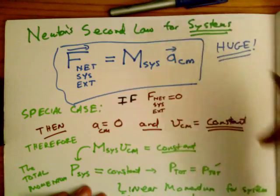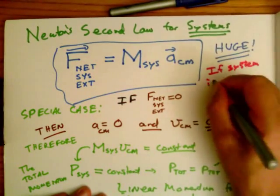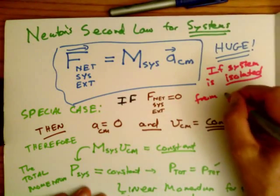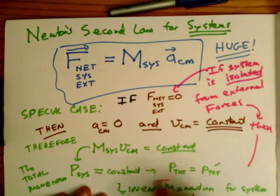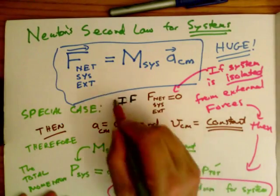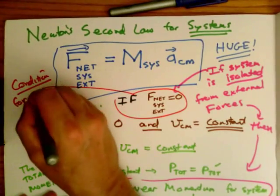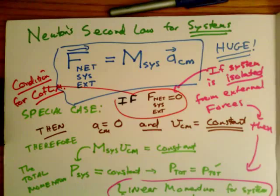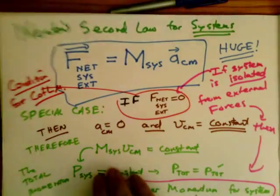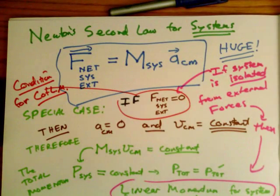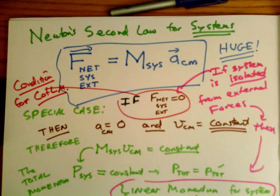I'm sorry that my camera rolled off the edge there. So if the system is isolated, which is to say no external net forces on the system as a whole, then linear momentum for the entire system is conserved. This is the condition for the application of conservation of linear momentum. Linear momentum is conserved if the net force on the system is zero. You can only apply conservation of linear momentum if the system is isolated from external forces.